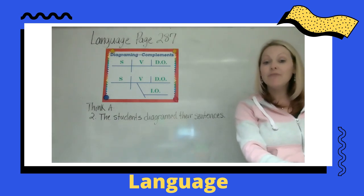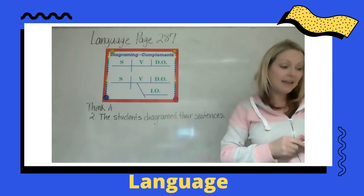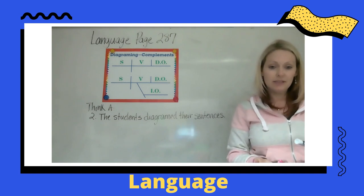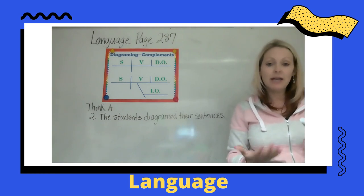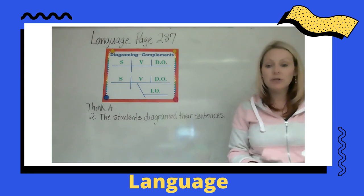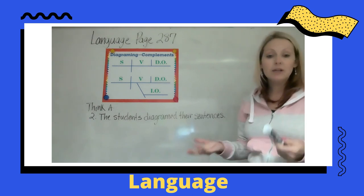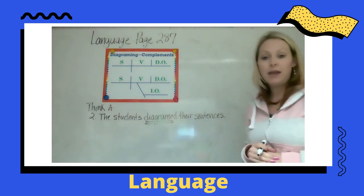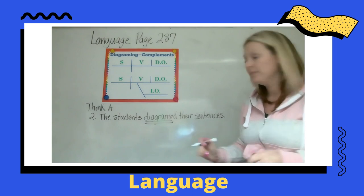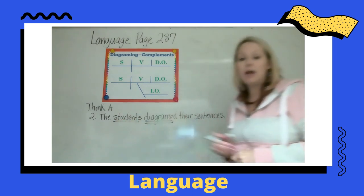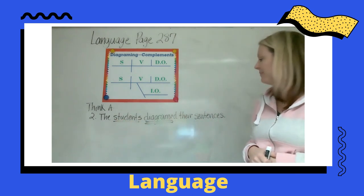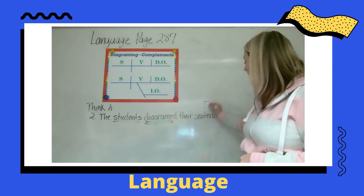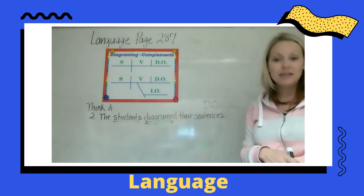Number two says: 'The students diagrammed their sentences.' Take a look at that one. What is our verb? Diagrammed. And who did the diagramming? Students — single underline that one. Then what did the students diagram? They diagrammed the sentences.